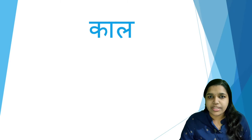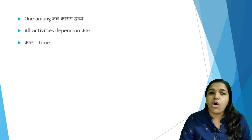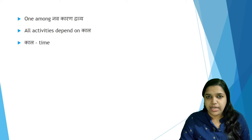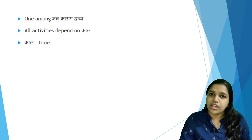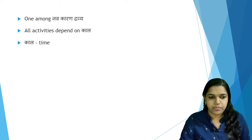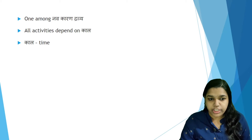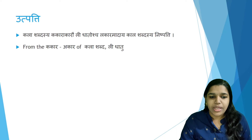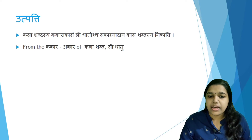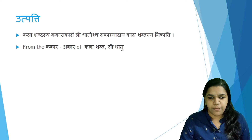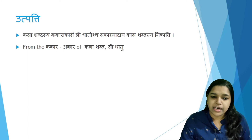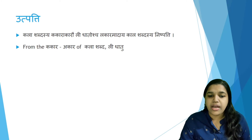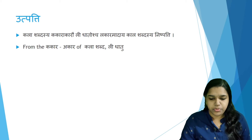Kala is one among the 9 Karanadravyas and all activities depend on Kala. In general, Kala refers to time. Regarding the Utpati of the word Kala: Kala Shabdasya Kakarakarau Lidhadosya Lekaramadaya Kala Shabdasya Nishpati — that is, from the Kakara and Akara of Kala Shabda along with the Lidhadu, the word Kala is being produced.